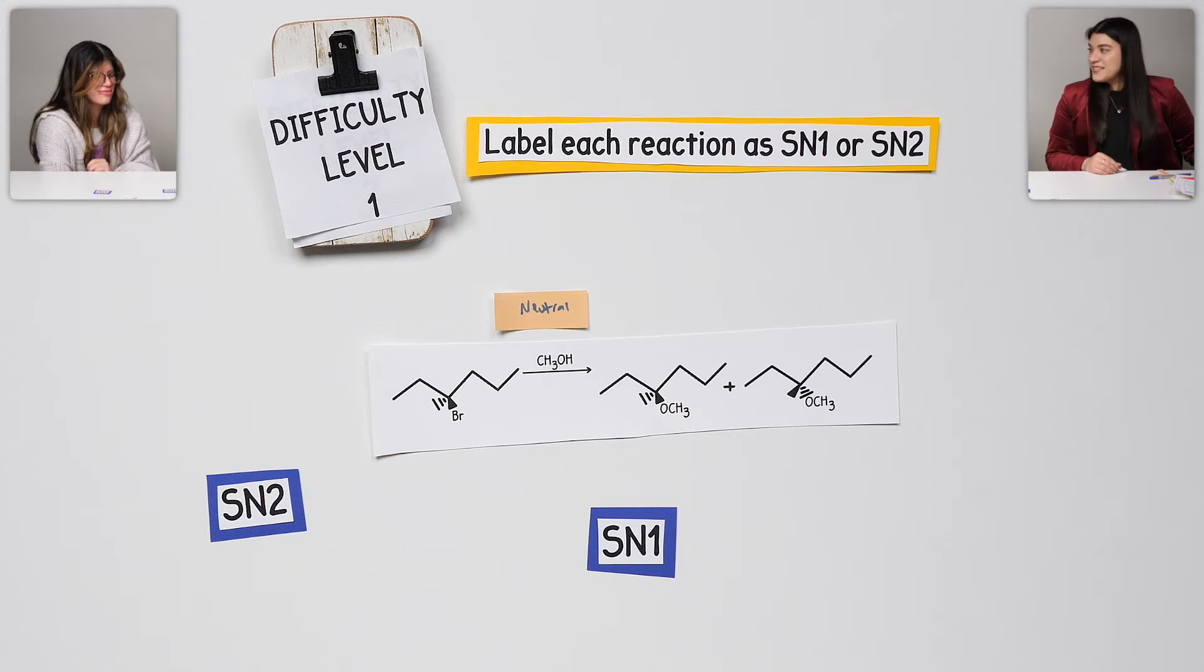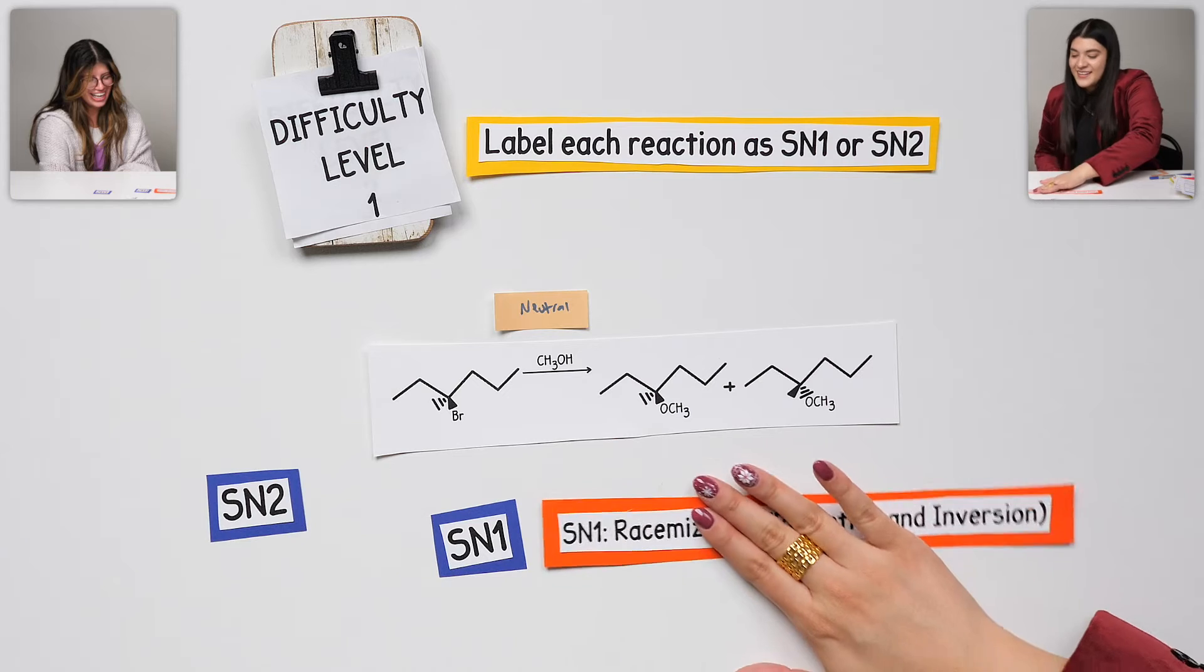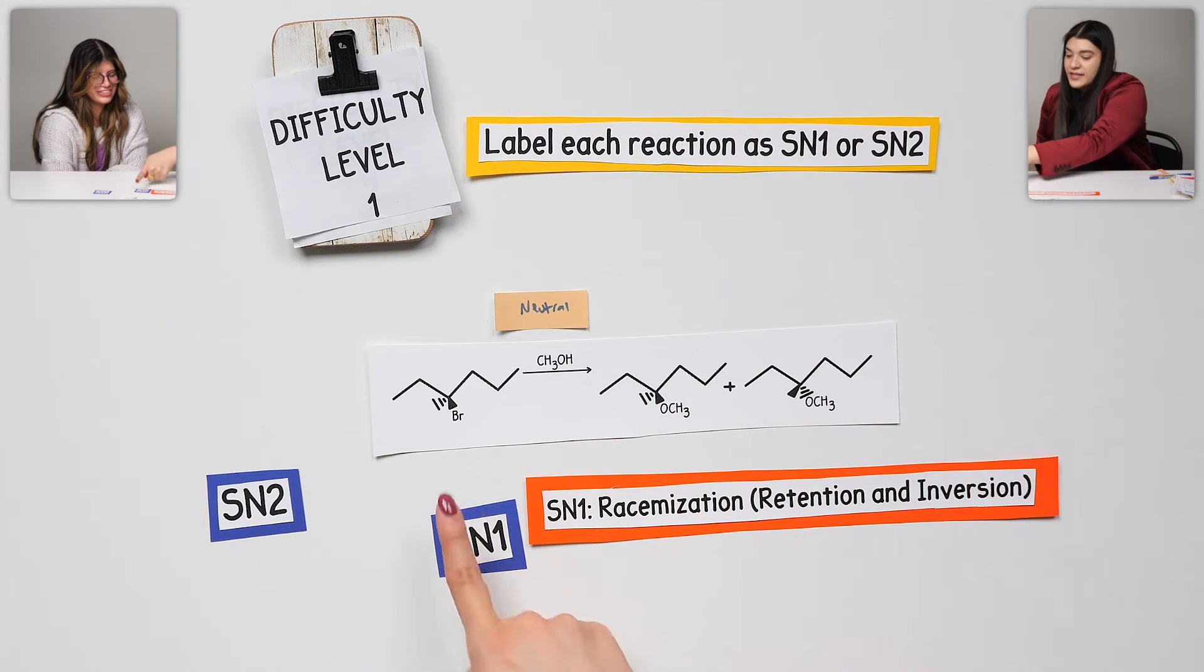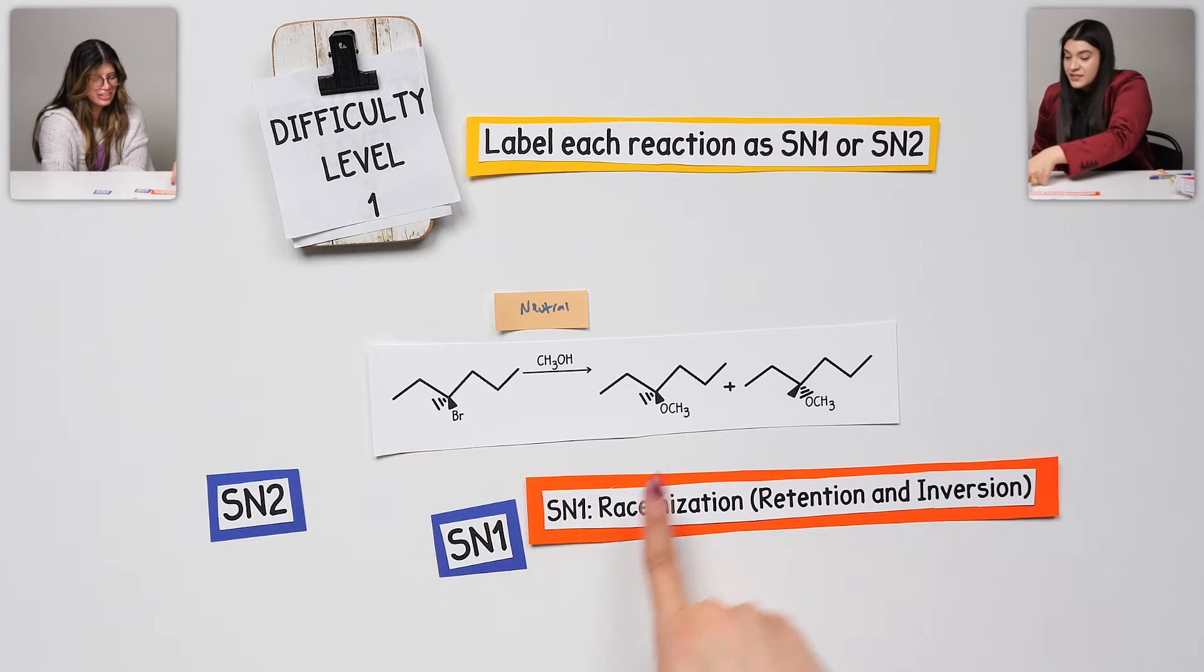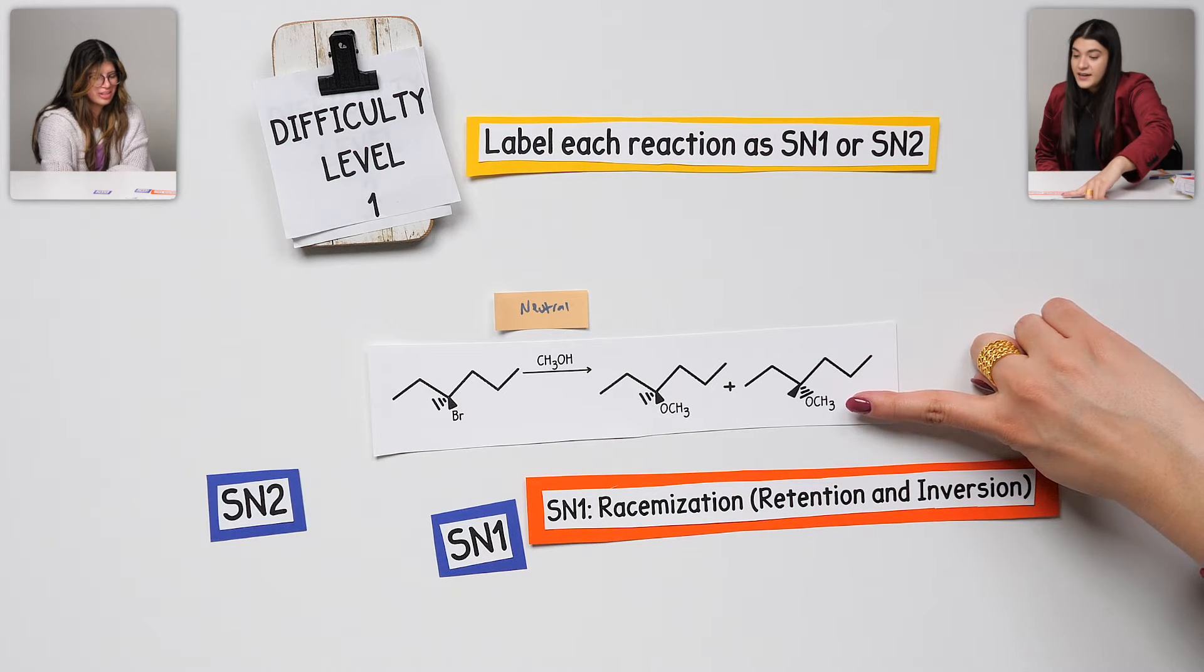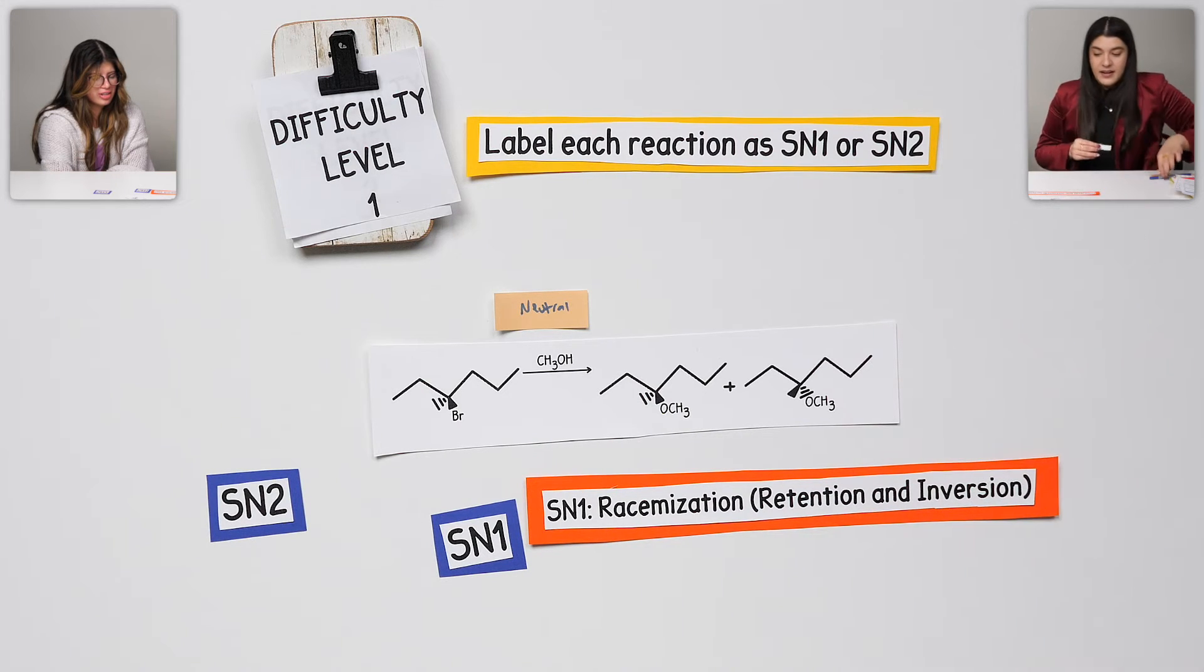What did we say that was with stereochemistry? Racemization. Good. So, that was when we have retention, just meaning that our first product will keep the same bond. So really the same configuration, RS. And then, inversion, completely change it. And that's where we see here.